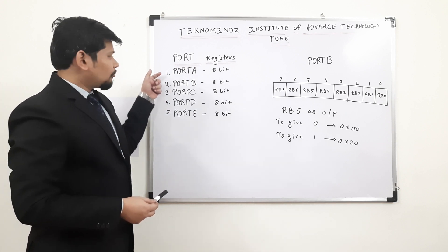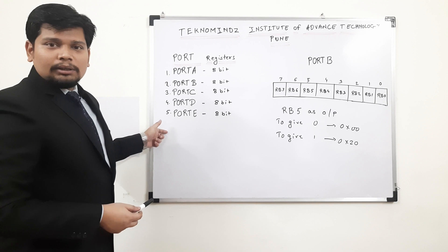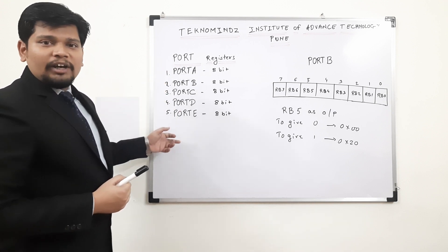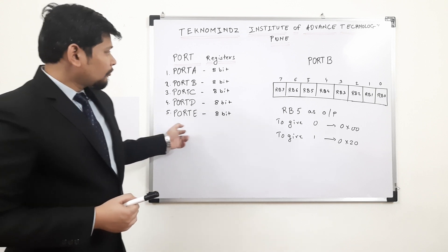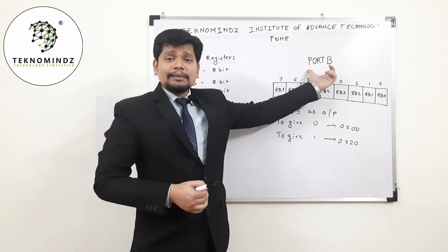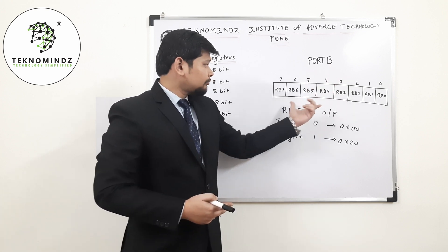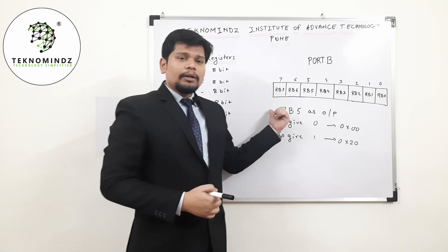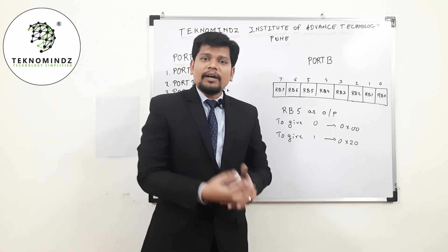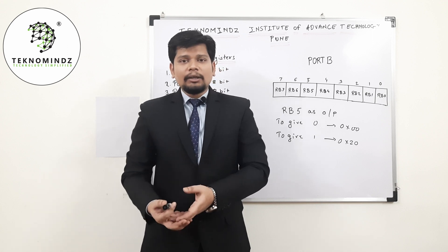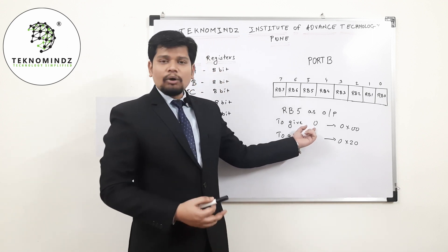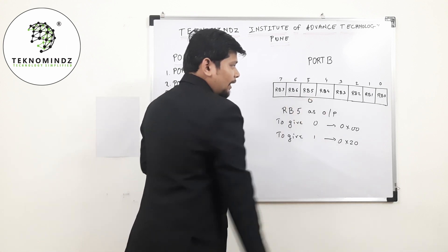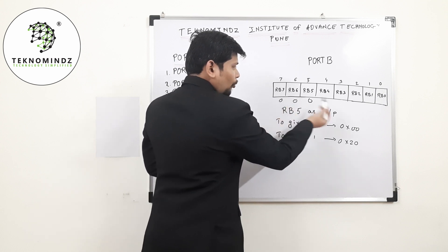As you can see over here, each port — port A, port B, port C, port D, and port E — all 5 ports are mentioned. If I take an example of port B, which is from RB0 to RB7, and I consider RB5 to be given data as an output — if I need to give logic 0 at RB5, I will provide 0 at RB5 and the rest of the pins will be don't care.